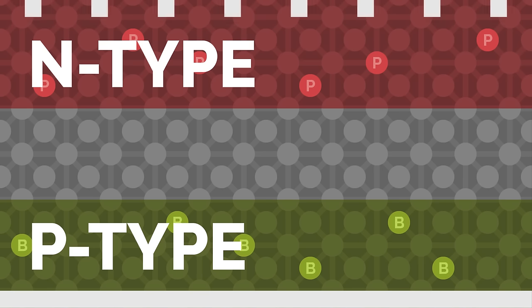Thin metal lines, typically made of silver, are printed on the top n-type layer, and the bottom p-type layer is in contact with an aluminum plate.